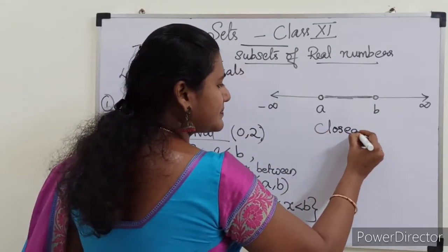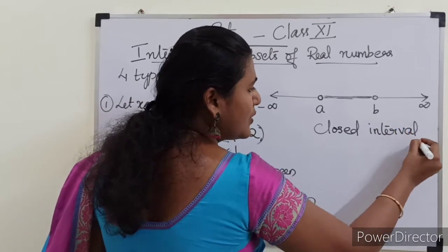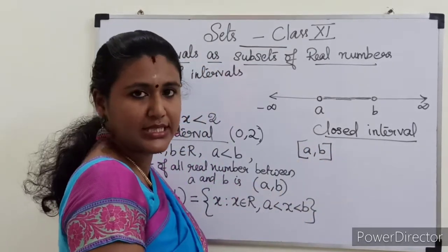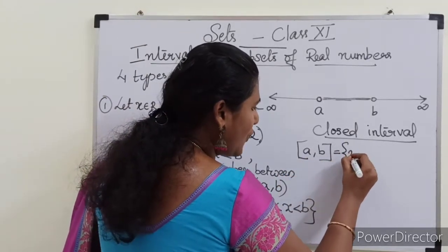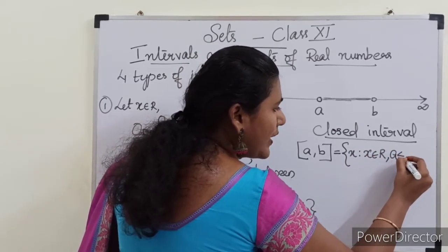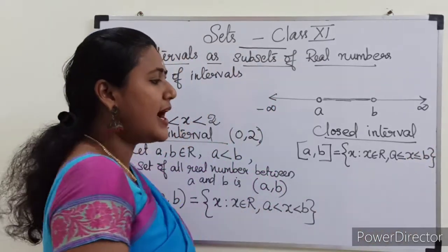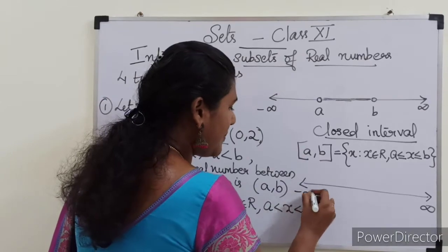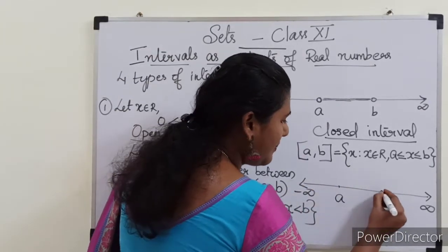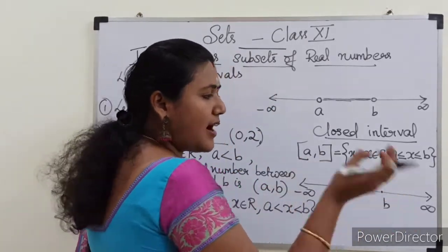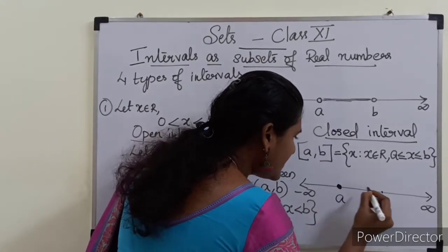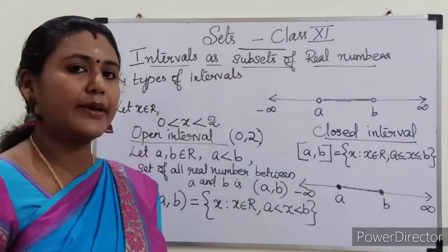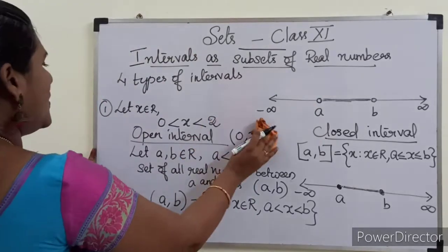For the closed interval [a, b], the set builder form is the set of all x such that x belongs to R and a ≤ x ≤ b. On the number line, since endpoints a and b are both included, we darken those two points and also darken the in-between region.